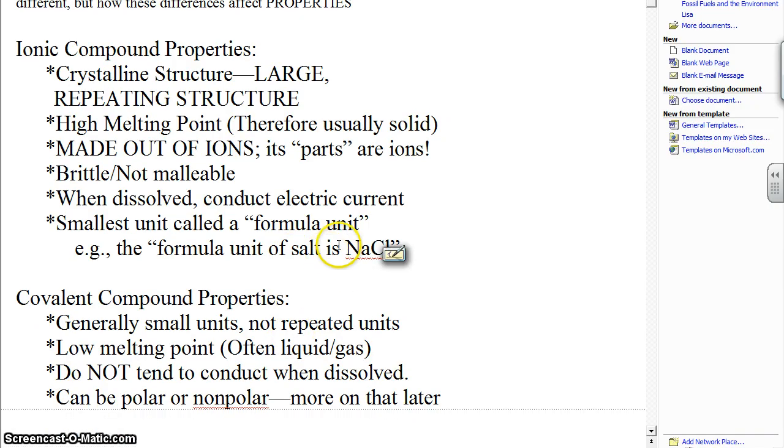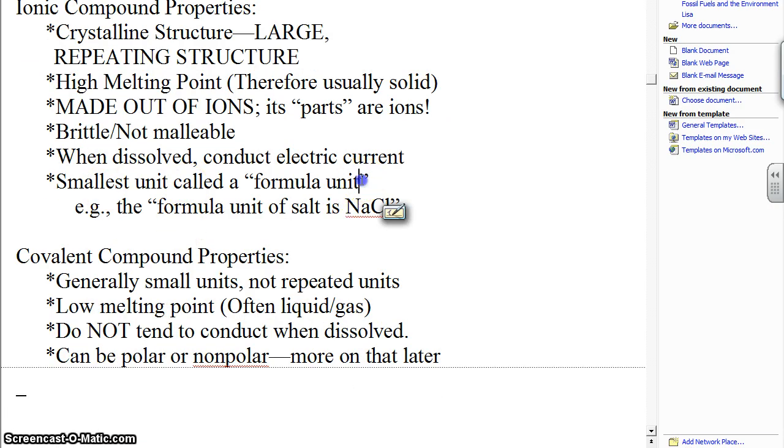Finally, one last little word about ionic compounds. The smallest unit of an ionic compound is called a formula unit. So the formula unit of salt is NaCl. We do not use the word molecule as regards ionic compounds.